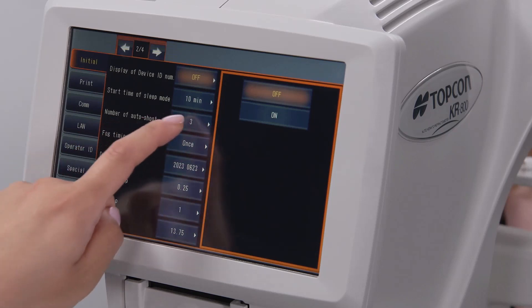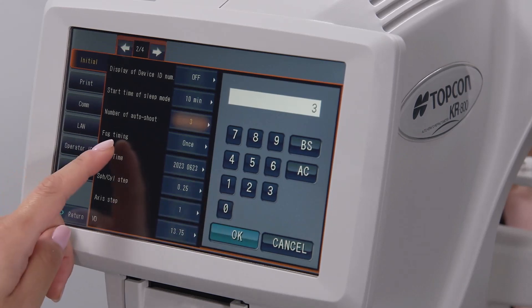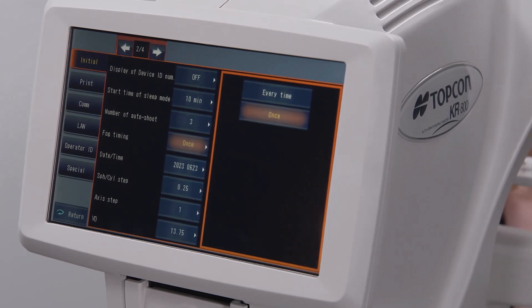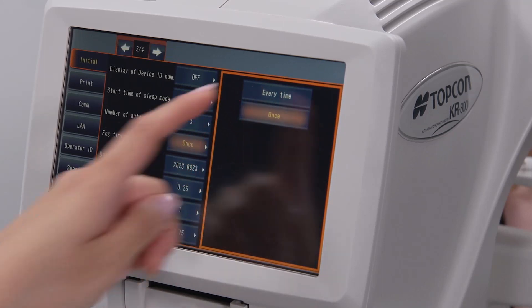Number of Autoshoot determines how many measurements are acquired of each eye. The usual number is 3. Fog timing determines how often the patient will have their vision fog to help prevent the autorefraction from being over minused. The options are once before the first measurement of each eye or once before every measurement.